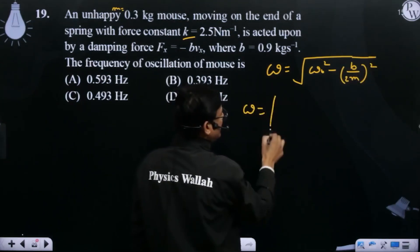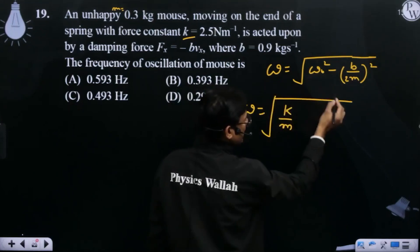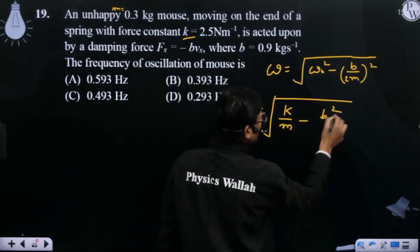We wrote omega naught as k by m, so this becomes k by m, and this square becomes B squared upon 4m squared.